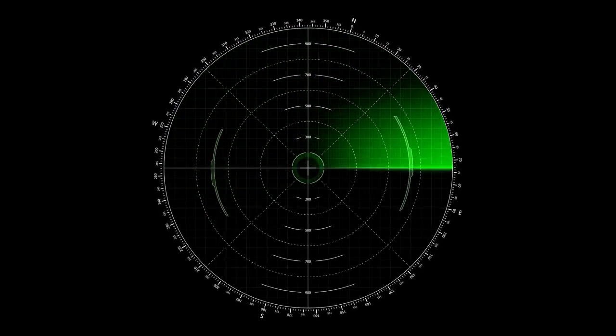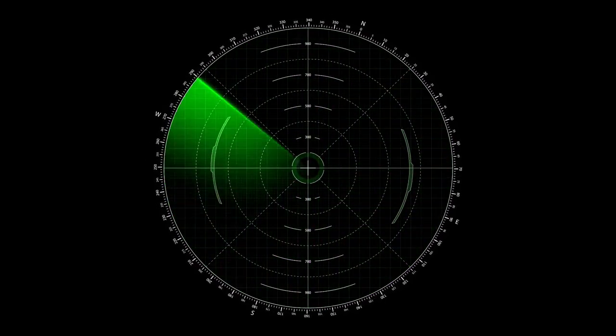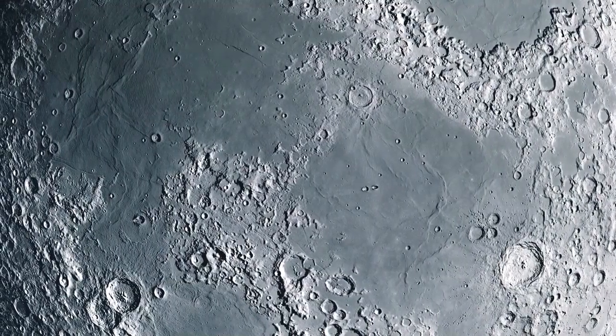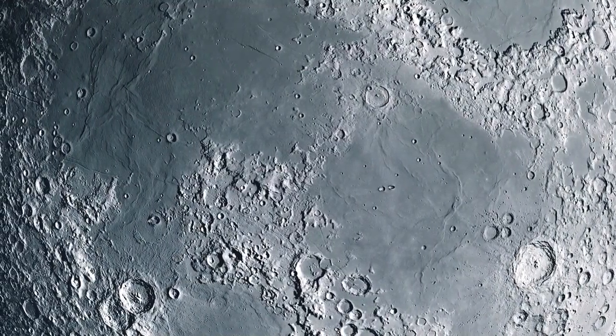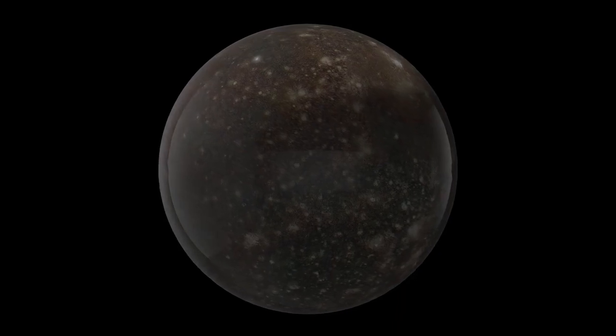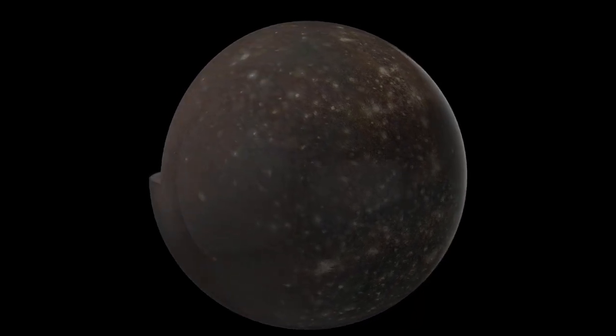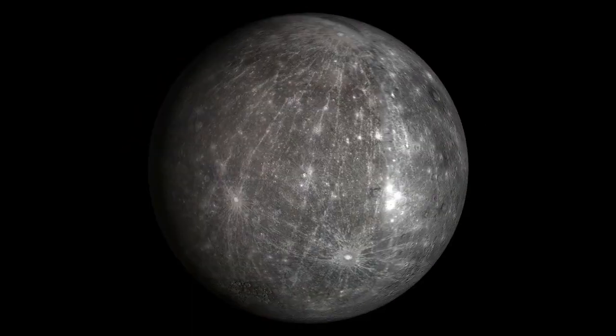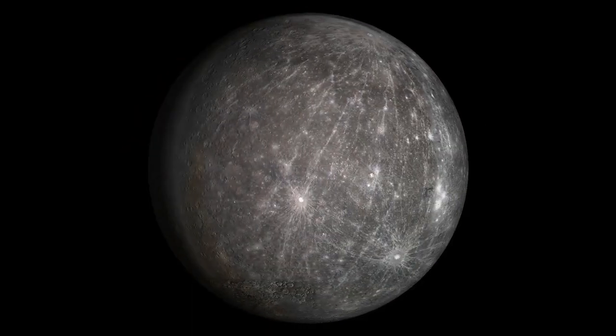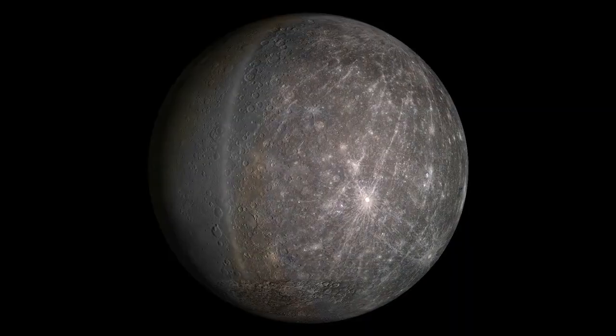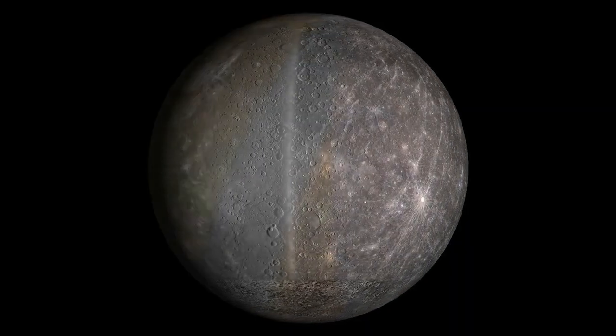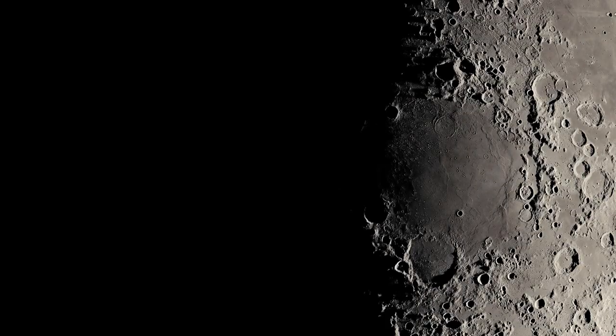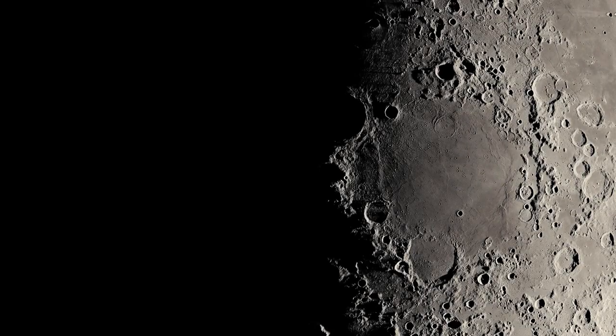If a small distant world like Pluto can have the ingredients for life, what about other icy moons or exoplanets orbiting far from their stars? Could Europa or Enceladus, moons in our own solar system with subsurface oceans, also harbor life? And what about planets orbiting dim red dwarf stars where warmth from the sun is limited? The discoveries on Pluto have redefined the boundaries of what we consider habitable.